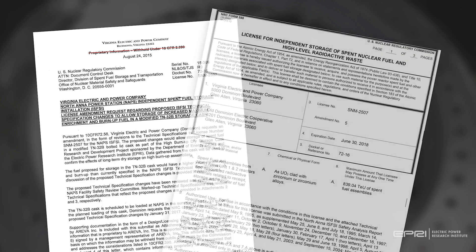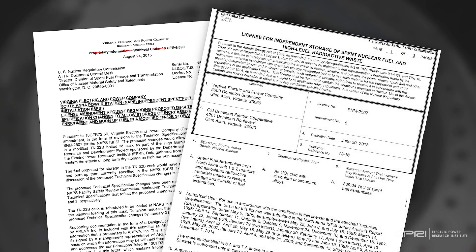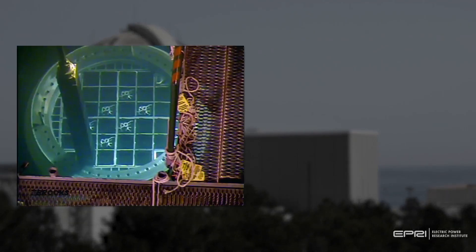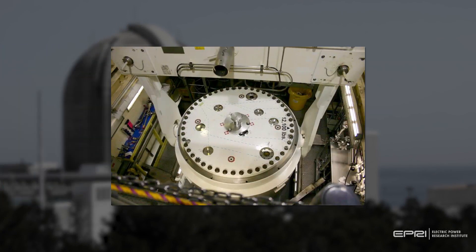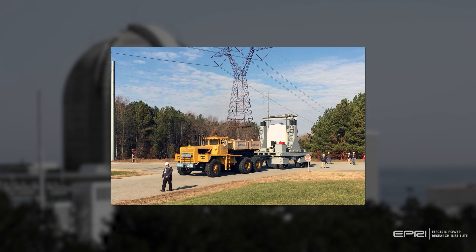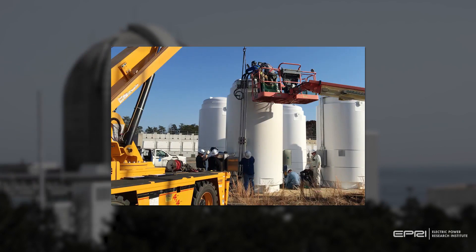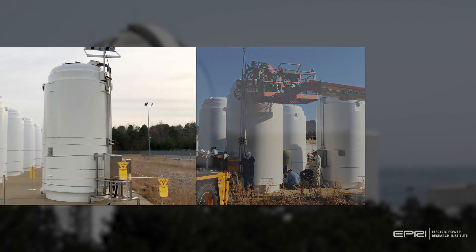After a comprehensive review, the NRC approved the amendment in September 2017. The high burn-up demonstration cask was loaded in November 2017 using standard industry practice and moved to the Independent Spent Fuel Storage Installation at Dominion Energy's North Anna Power Station in Virginia.